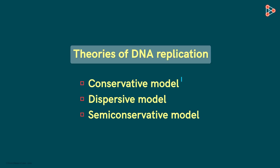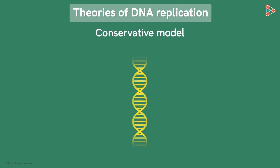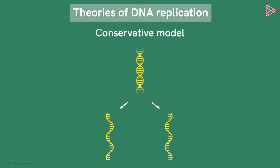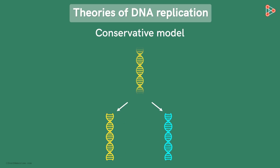The first model is the conservative model. This model suggested that two DNA strands separate and serve as templates for replication. But soon after replication, the strands join back to form the original parent DNA, while the newly synthesized strands join to form a completely new DNA. Thus, we get a newly synthesized DNA molecule and also get the original parent DNA molecule back, which is conserved — hence the name conservative replication.